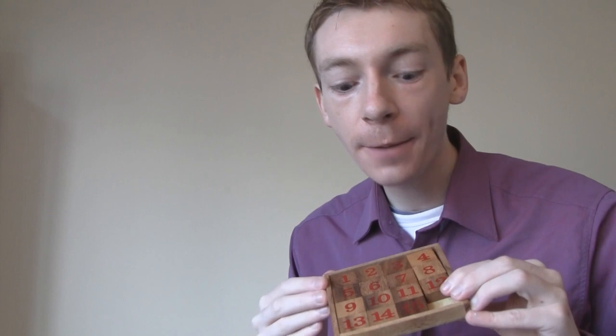It's called a 15 puzzle. You may get them in gift shops, perhaps with a picture of Warwick Castle on it or something, and then you mix up the picture and then you have to put it back together again.